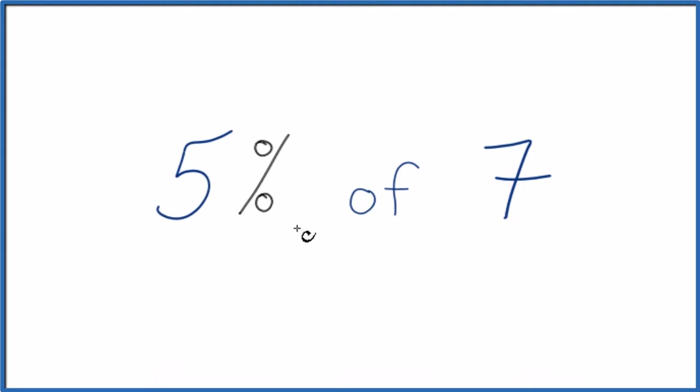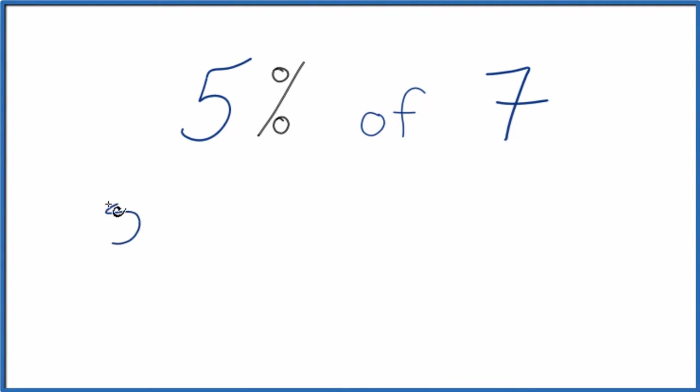5%, the percent means per 100, so we could call this 5 over 100, and that would be the same as 5%. The of we can think about as multiplication, so we're going to multiply 5 over 100 times 7.